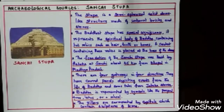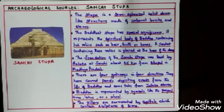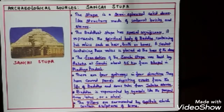There are four gateways in four directions, and they have carved panels depicting events from the life of Buddha and tales from the Jataka stories. In this stupa, Buddha is represented by symbols like the Bodhi tree, lotus, or a wheel. The pillars are surmounted by capitals containing sculptures of lions.